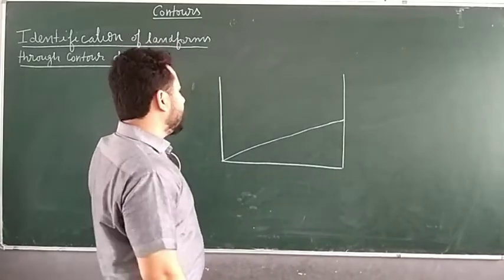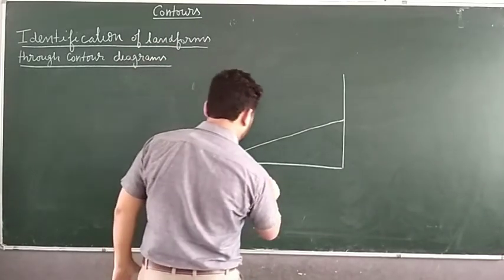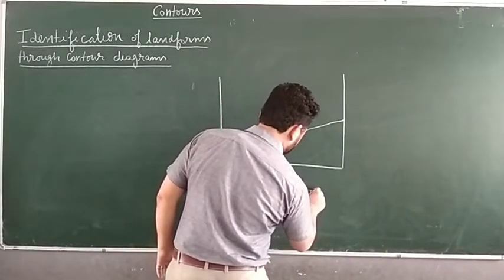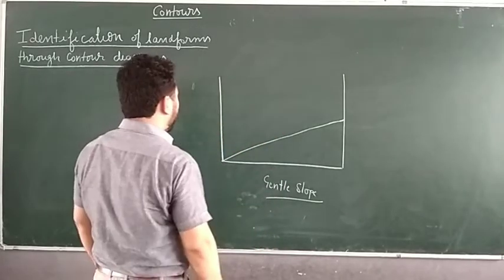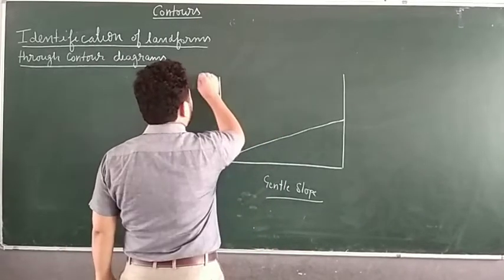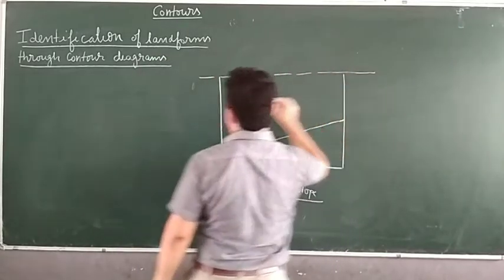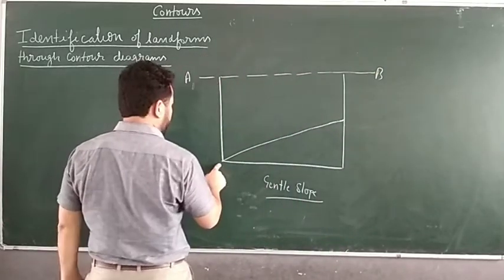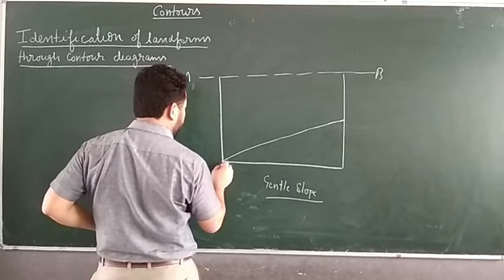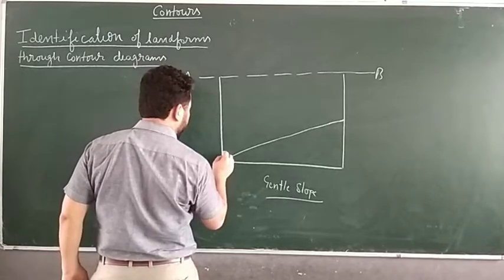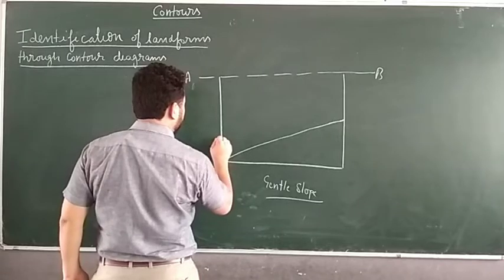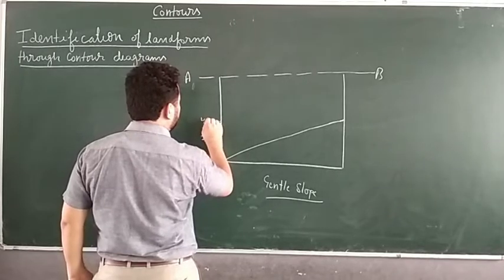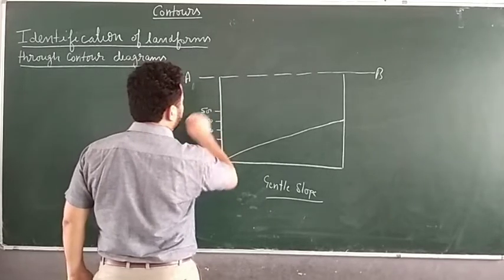Suppose this is the gentle slope of a hill. How will we draw the contour lines for it? We will write here A and B, and number it starting from 0 to 100. So this is 0, then 100, then 200, then 300, then 400, then 500, like this.